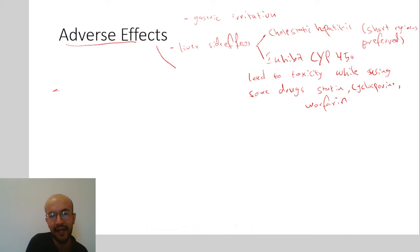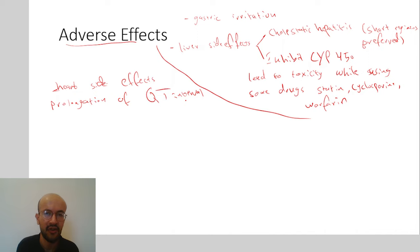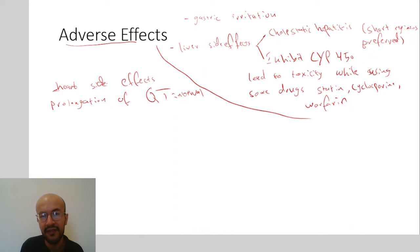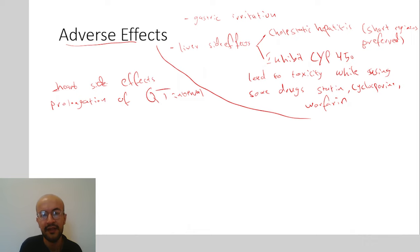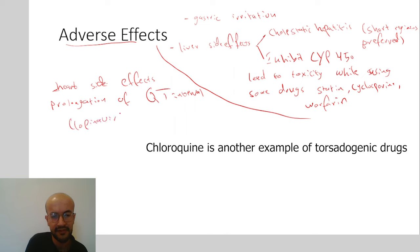Macrolides also have cardiac side effects, including prolongation of the QT interval. The normal QT interval is 0.45 seconds, but these drugs can prolong it and cause the arrhythmia torsades de pointes — making macrolides considered torsadogenic. This becomes worse when combined with other torsadogenic drugs such as lopinavir.